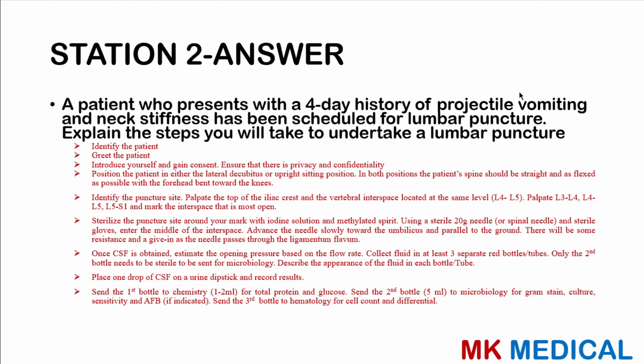You will be obtaining CSF. Estimate the pressure based on the flow rate, and notice the color and consistency of the CSF. Collect it in three separate red-top bottles. Place one drop of CSF on a urine dipstick and record results. Send one to two mils for biochemistry — total protein and glucose. Send another bottle for microscopy, Gram stain, culture and sensitivity (about 5 mils, sterile). Send the other bottle to hematology for cell counts and differentials.